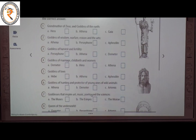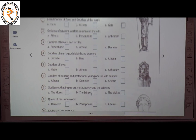The next and final topic is Greek Goddesses. Identify these goddesses from Greek mythology and choose the correct answer. The first one: grandmother of Zeus and Goddess of the Earth. The answer is C — Gaia.